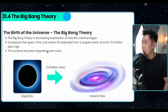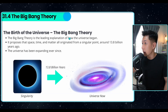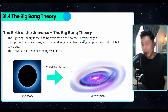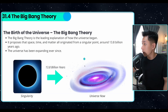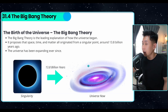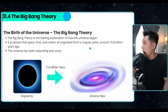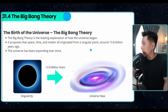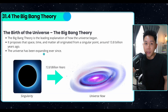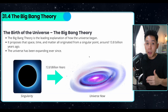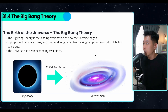In the last part of the video, to end this series of A-level physics, we will talk about the birth of the universe — the Big Bang Theory. The Big Bang Theory is the leading explanation of how the universe began from a singularity. It proposes that space, time, and matter all originated from a singular point around 13.8 billion years ago, and the universe has been expanding ever since. I'm going to show you the evidence people have used to support this theory.